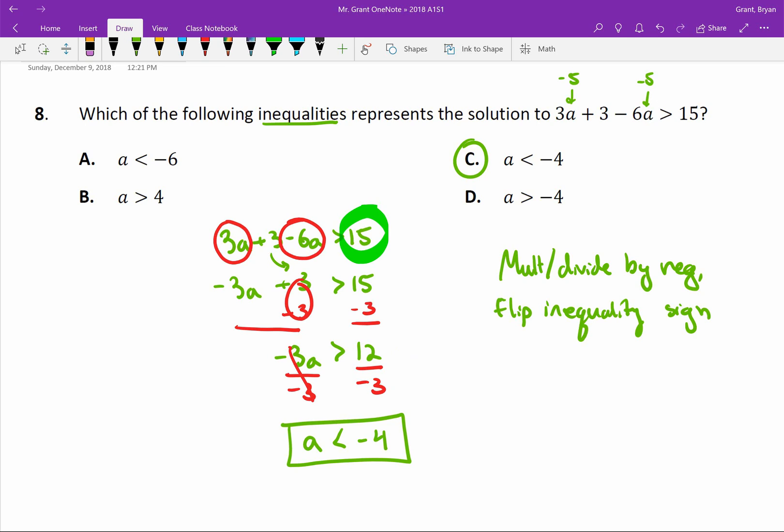Or you could have tried a number that's bigger than negative 4. Maybe make sure that D is not the right answer, you could have tried something like 0. And if you put 0 in, it's going to cancel this, and cancel this, and leave you with 3. Is 3 bigger than 15? Nope. Also, D definitely didn't work, it still has to be C.